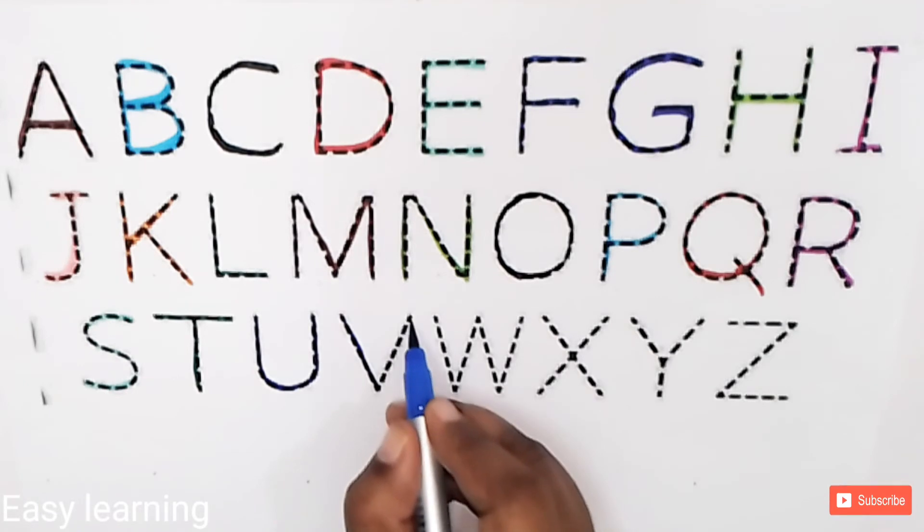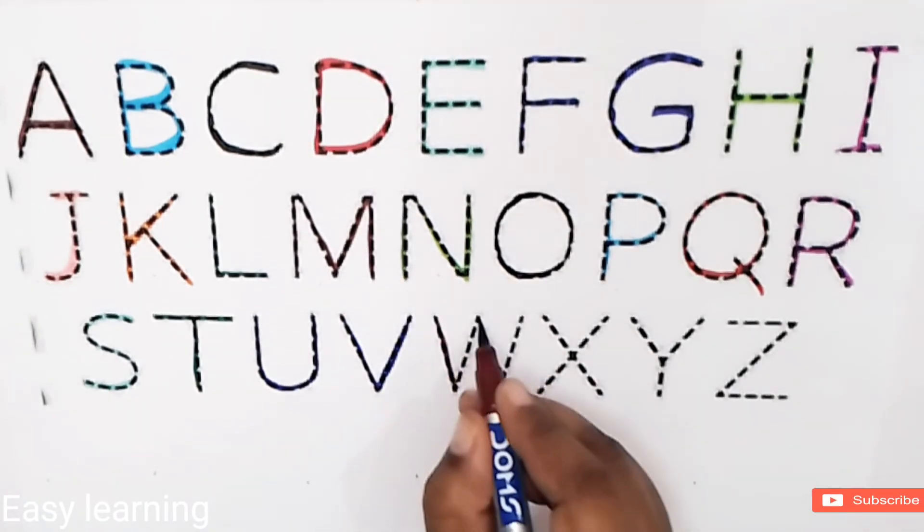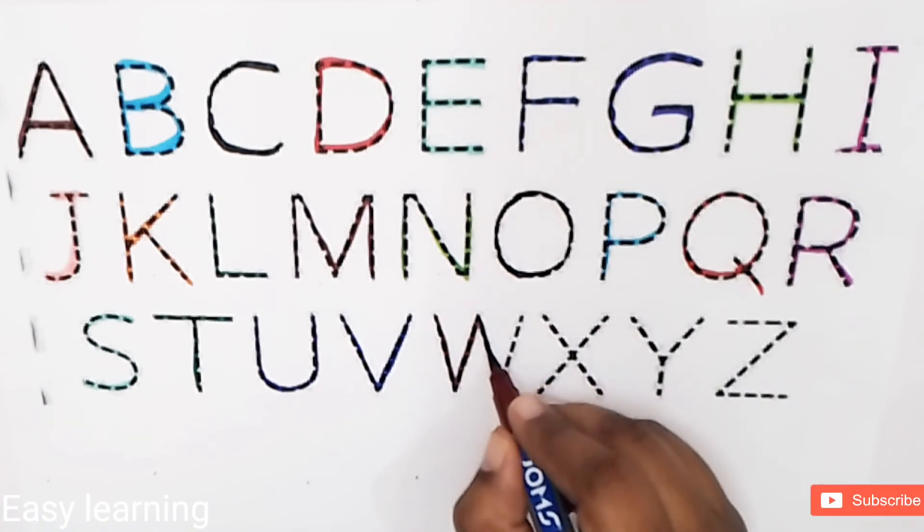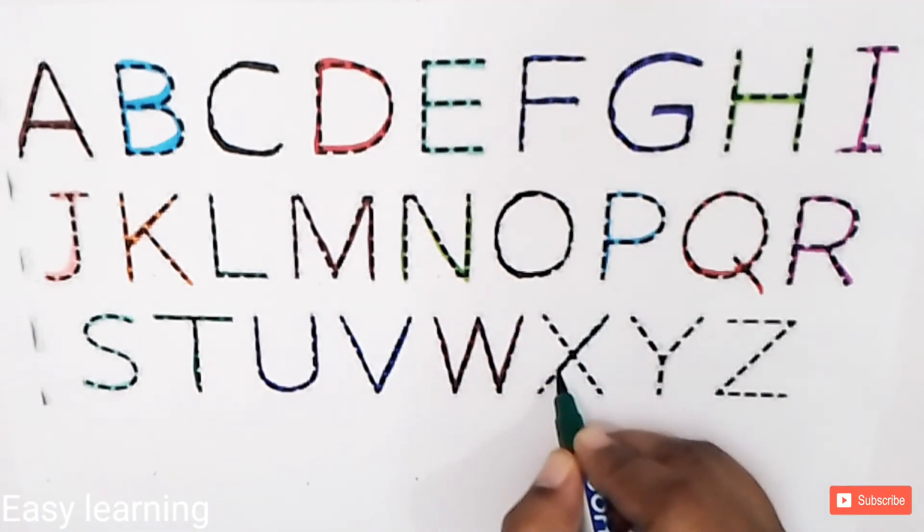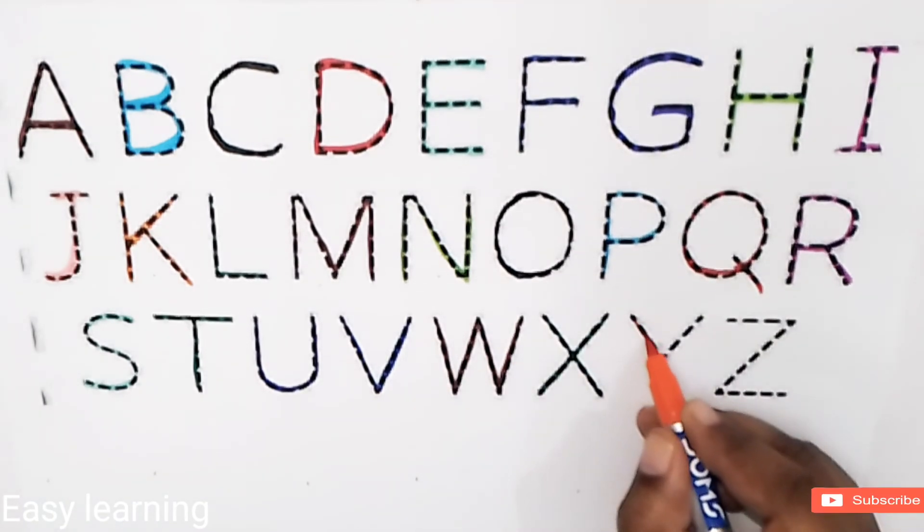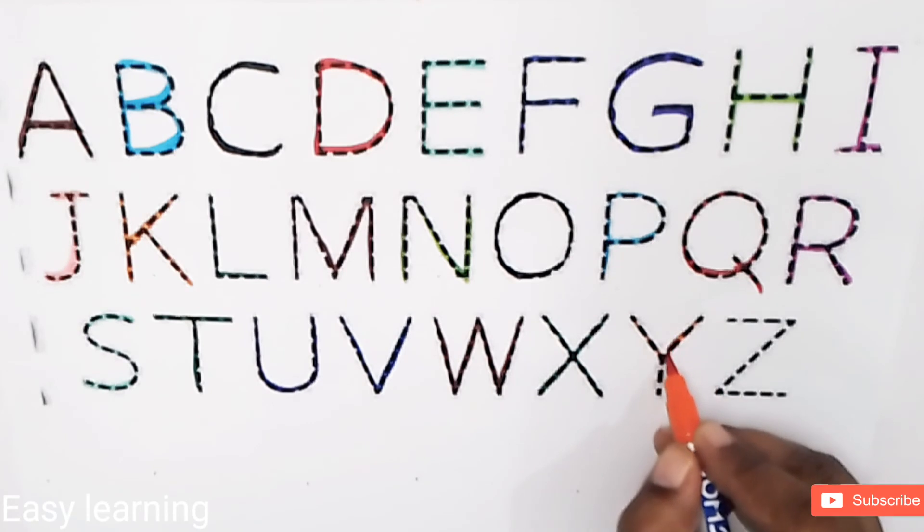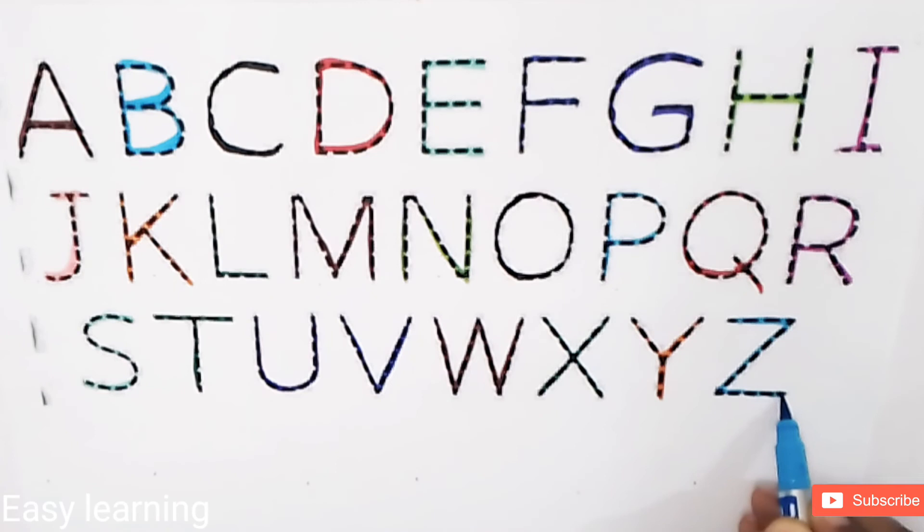V, V for Vegetable. W, W for Watch. X, X for Xylophone. Y, Y for Yacht. Z, Z for Zip.